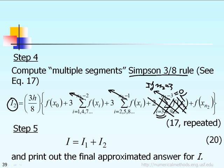But this term will be there if you use multiple segment Simpson 3/8 rule. For example, if n2 equals 6, 9, or 12, then this term will be there, so you calculate I₂ from there.